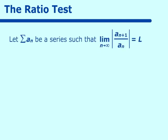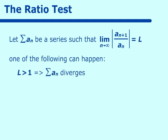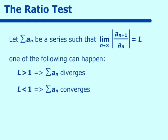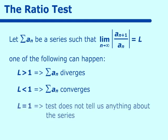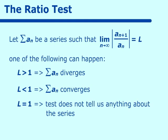Let a sub n be a series such that the limit as n approaches infinity of the absolute value of a sub n plus 1 over a sub n is equal to some limiting value L. One of the following things can happen: if L is greater than 1, the series diverges; if L is less than 1, the series converges; if L equals 1, this test doesn't tell us anything at all.